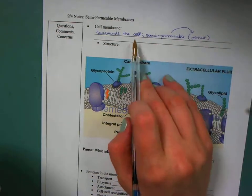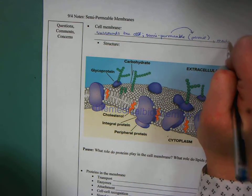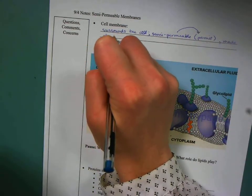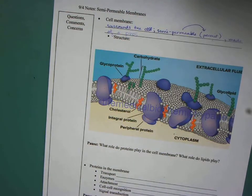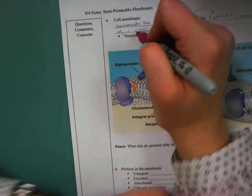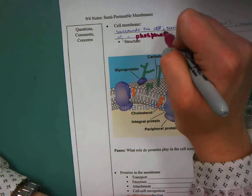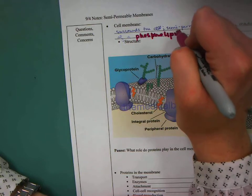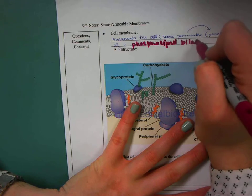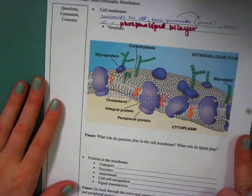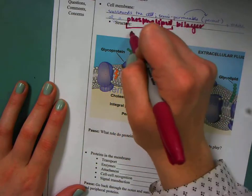And so the cell membrane, it does surround the cell. It is semi-permeable, and it's made of a phospholipid bilayer. So what is a phospholipid? Well, we have a lipid, obviously, and then we have this little thing called a phosphate.